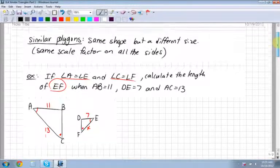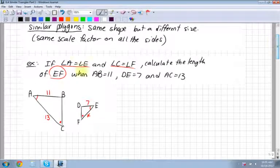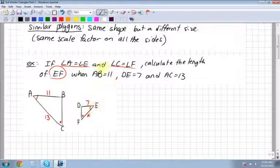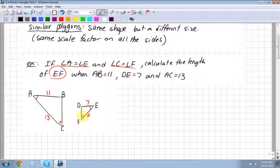Let's look at an example here. So here I have two triangles. If angle A, which is up here, is equal to angle E, which is over here, remember orientation is very important. Sometimes they're not always drawn in the same orientation. And then it says angle C, which is down here with the dot, is equal to angle F, which is over here with the dot. Then it says calculate the length of EF, which I've labeled X.